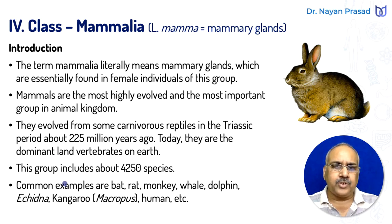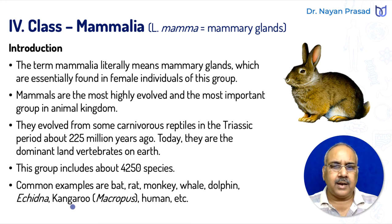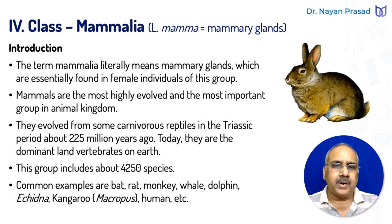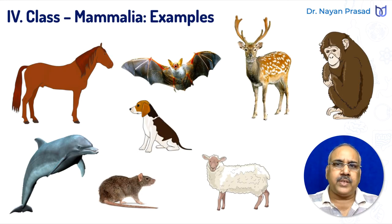This group includes about 4,250 species. Common examples are bat, rat, monkey, whale, dolphin, echidna, kangaroo, and humans. Several others are there, and remember these are all found in different habitats. Let us see the images of these common animals of Class Mammalia.